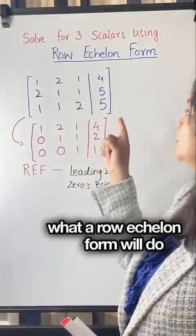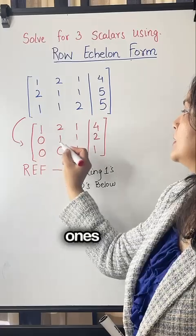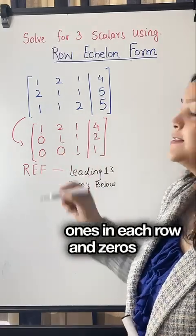So what a row echelon form will do to a matrix like this, it will convert it to this kind of a matrix where you have leading ones in each row and zeros below it.